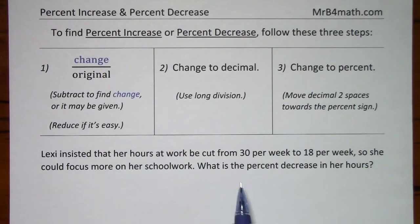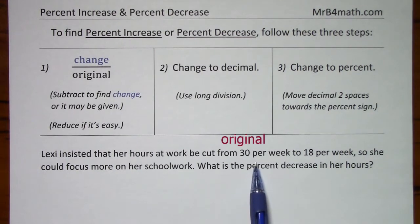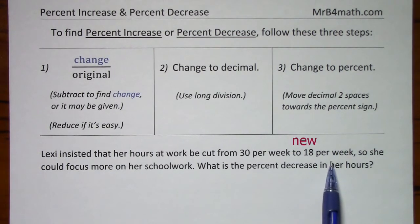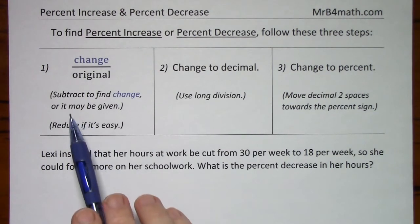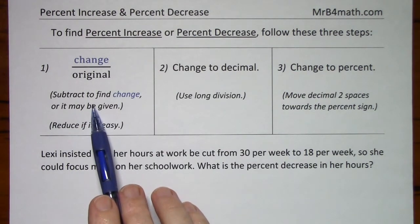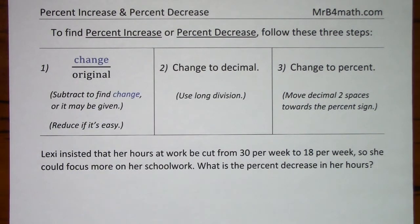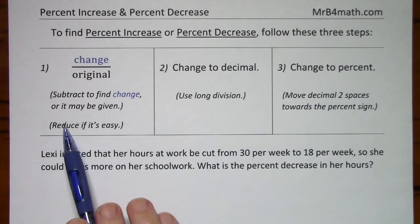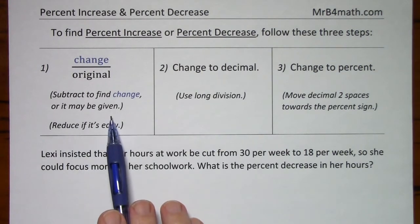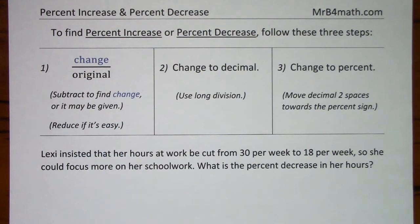In this example, it goes from 30 to 18, so that's a change of 12. You get that by subtracting. You could also have a problem where the change is given specifically — that'll be the last example in this video.